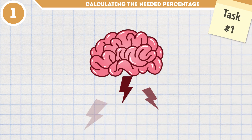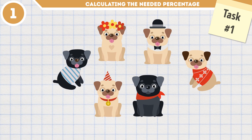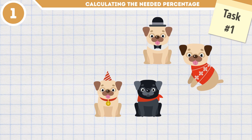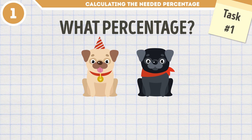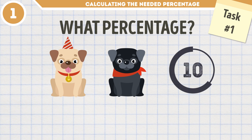Task number 1. Your dog just gave birth to 6 of the cutest puppies the world has ever seen. Unfortunately, you can keep only 2 of them. So, what percentage of your puppies will you keep, and what percent will you give away? You have 15 seconds to figure it out. Feel free to pause the video if you need more time.